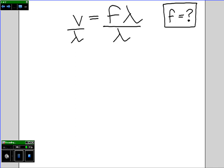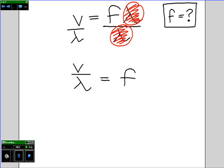Notice that on the right-hand side, we have lambda divided by lambda. Remember that anything divided by itself equals 1, so we can cancel this out. We're left with v divided by lambda equals f. F is the thing we want to find out, so it would be more conventional to write f equals v divided by lambda.